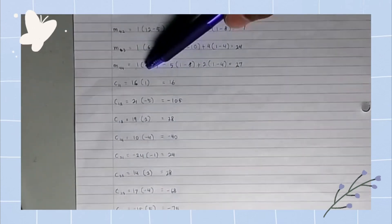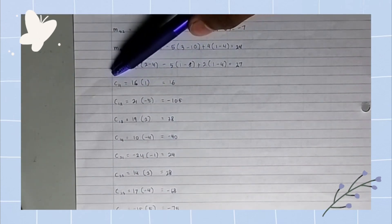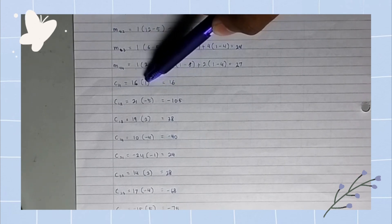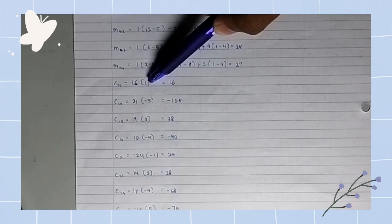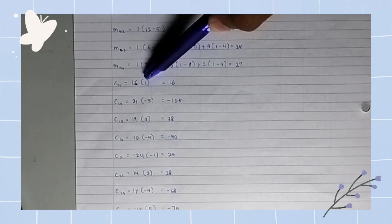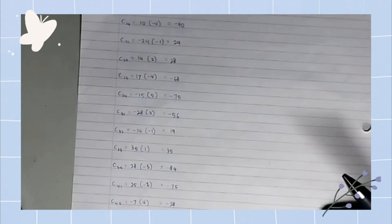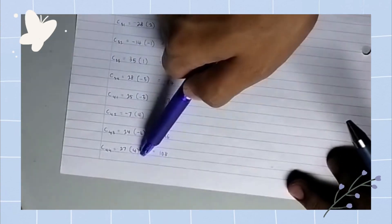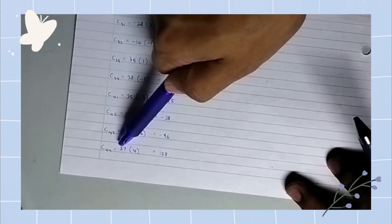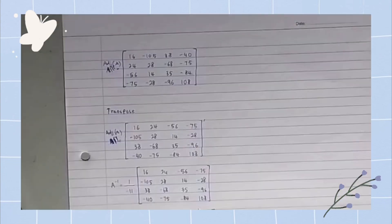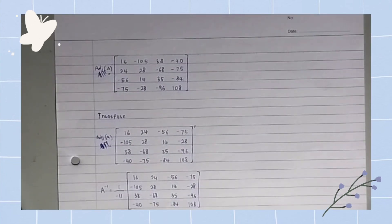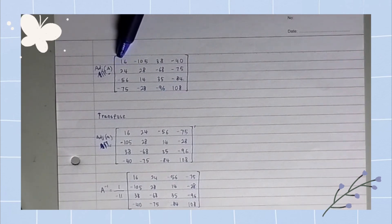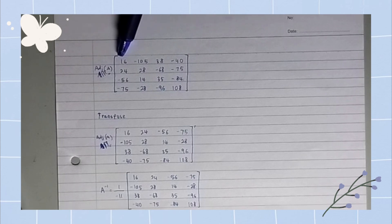We multiply each minor with the original number. For example, number one's minor gives cofactor 60. The last one, number four, is also multiplied with its minor. After we get all the cofactors of each number, we place them together to form a matrix again, and then we transpose it.